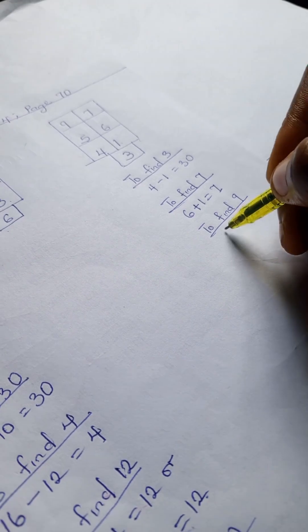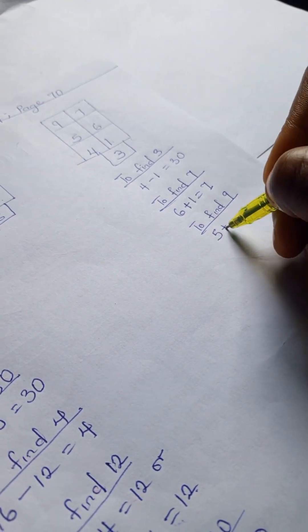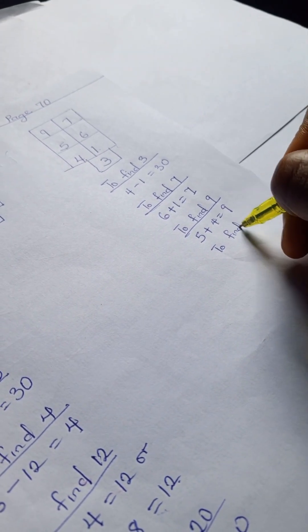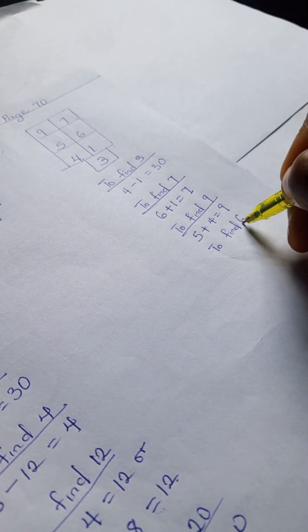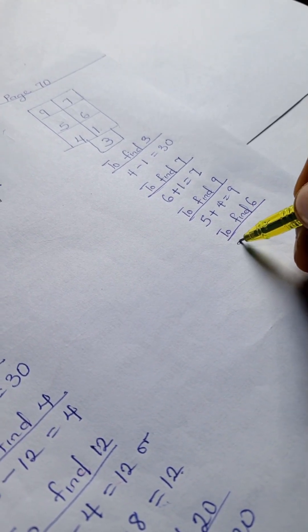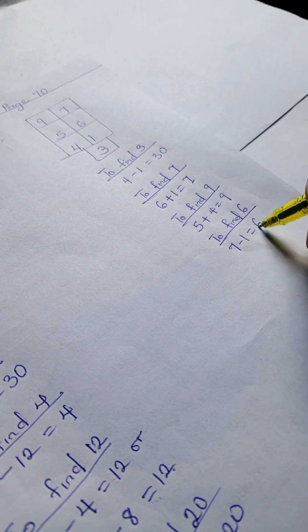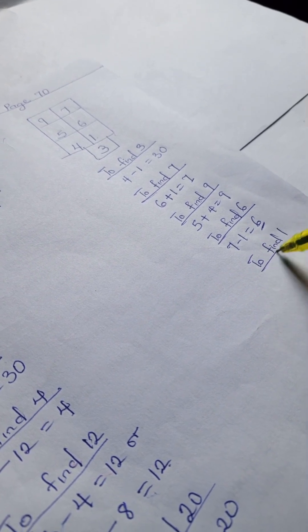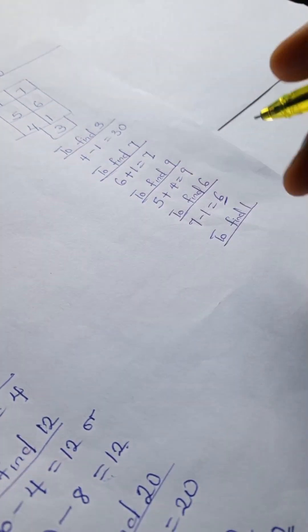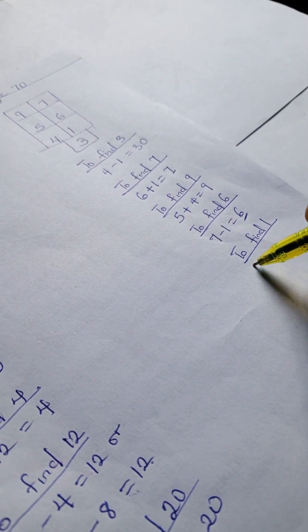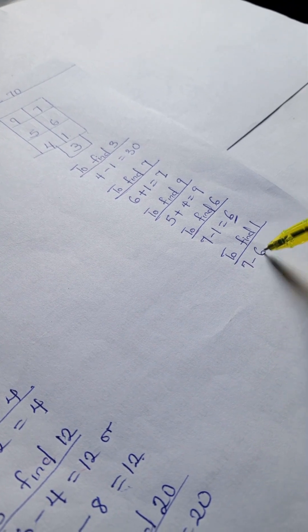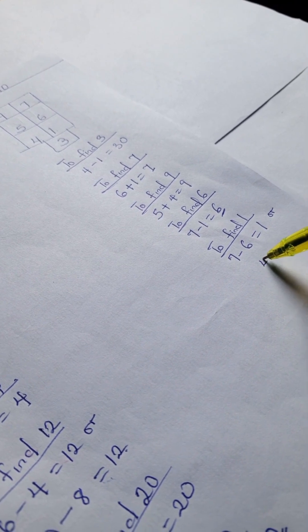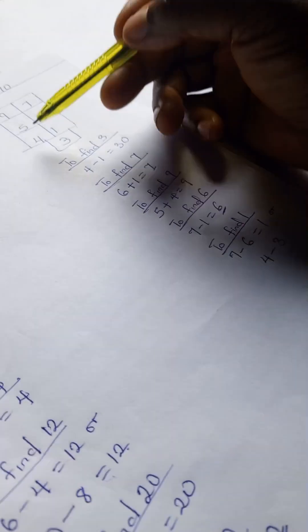To find 9, we have 5 plus 4 equals 9. To find 6, we have 7 minus 1 equals 6. To find 1, we have 7 minus 6, which gives us 1. We can also write 4 minus 3 equals 1.